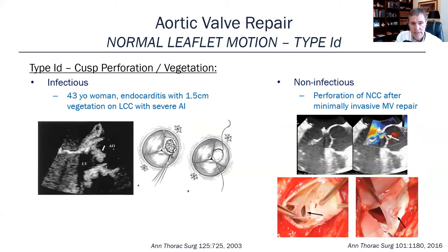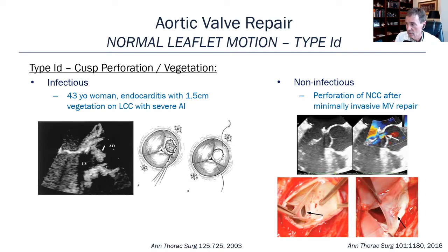Type 1D is cusp perforation or vegetation. Here's a patient from years ago who had a vegetation present on one of the leaflets. We were able to reconstruct that leaflet with glutaraldehyde-tanned pericardium and get a good long-term result. For non-infectious perforations, here's one that occurred after a minimally invasive mitral valve repair where a guide wire for a balloon occluder went through the leaflet — we were able to fix that with a patch as well.